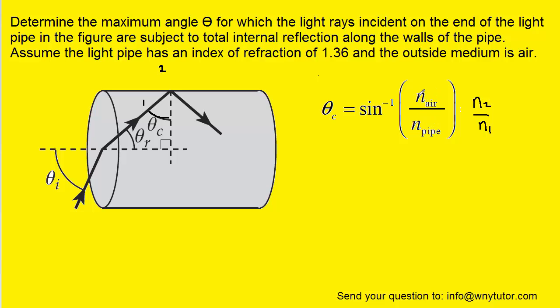The n of air has a value of 1, you can look that up in your textbook, and then the value for the pipe is 1.36 as given in the question. So we'll plug in those values to get the so-called critical angle. And when we compute this we get approximately 47.3 degrees.